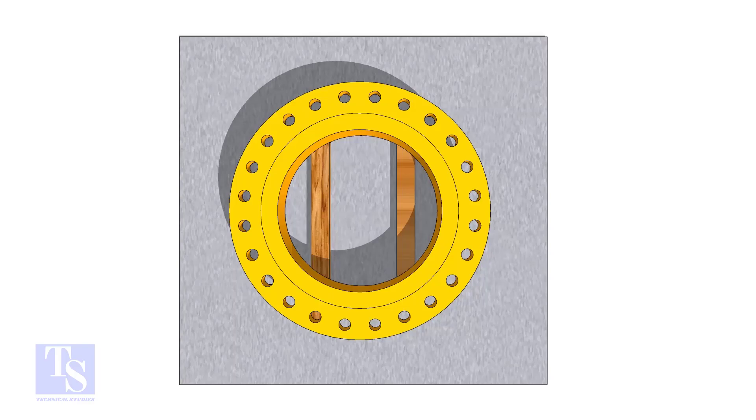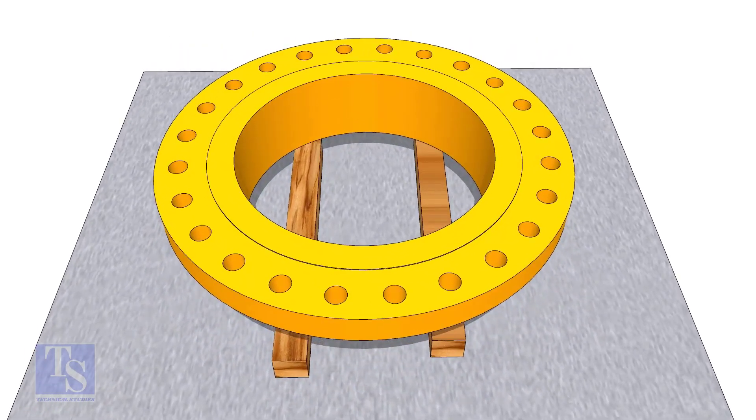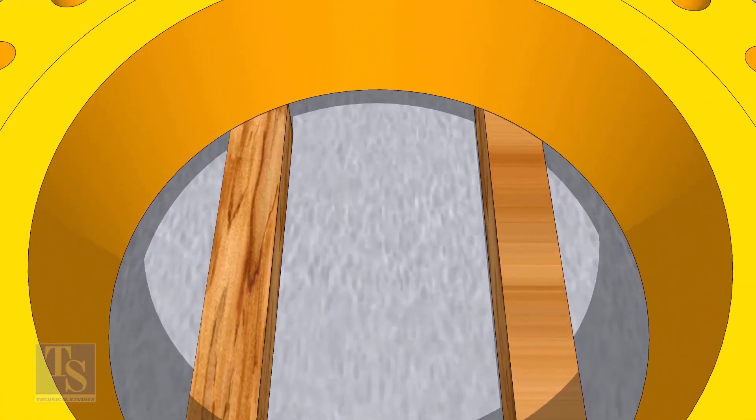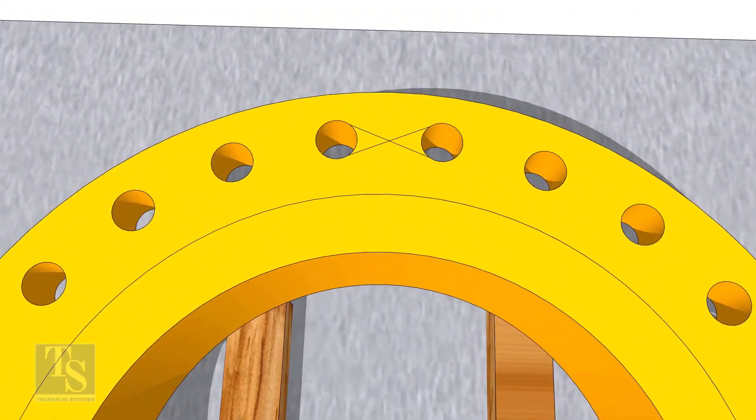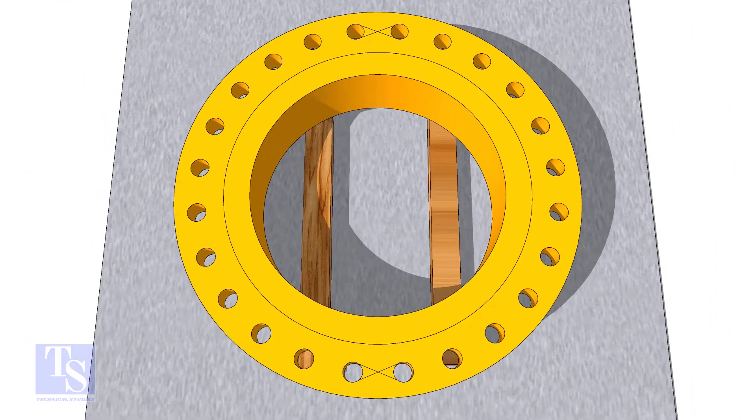In the second method, you need to mark the center line of the flange. Draw tangential lines on two adjacent holes on opposite sides. Draw a line as shown.